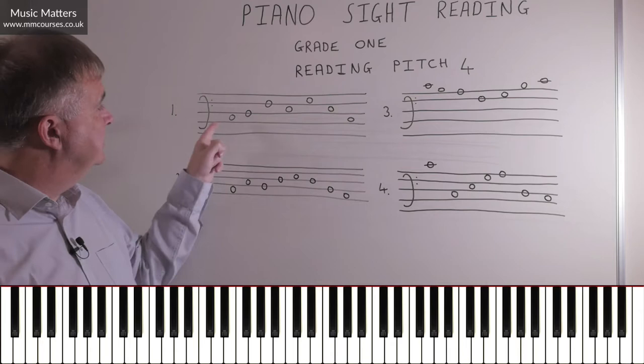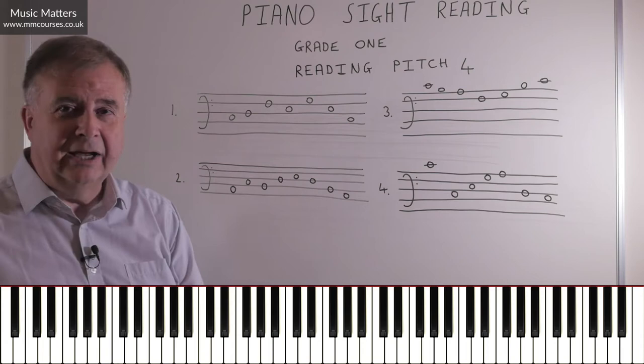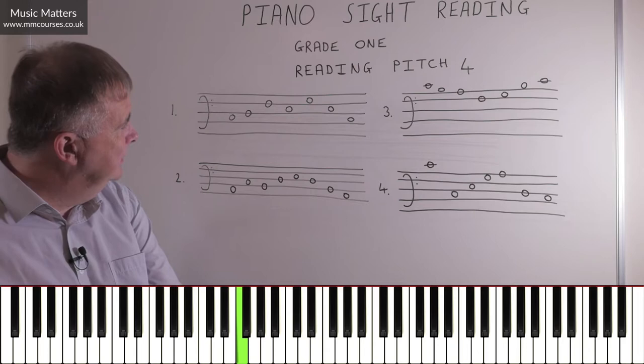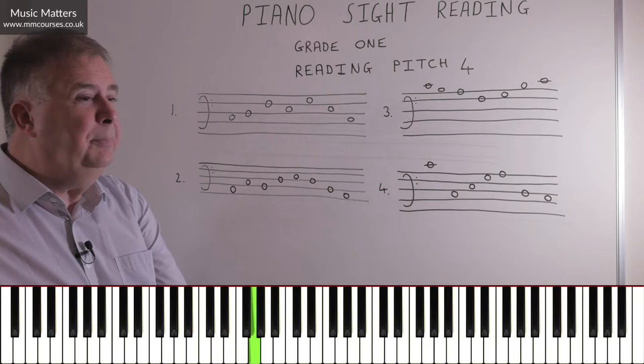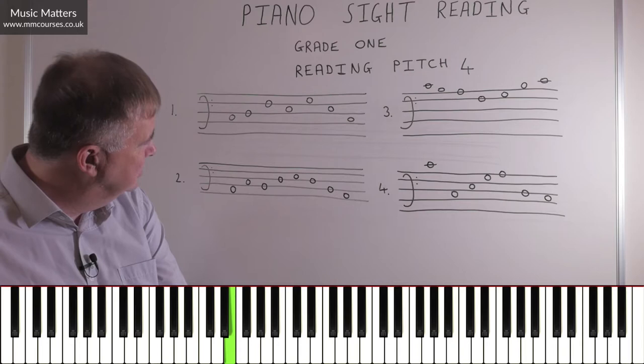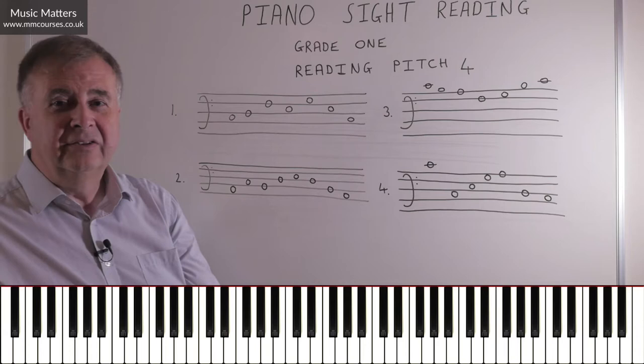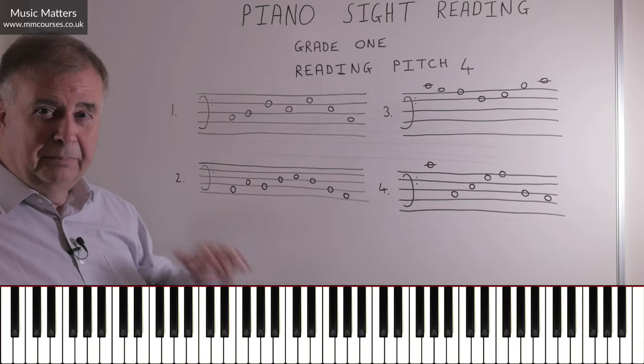Can we find those notes on the keyboard? The first note is C, an octave below middle C - the next C down. Then stepping up to D, skipping up to F, stepping down to E, skipping up to G, skipping back down to E, and skipping back down to C to finish. How much did you do by thinking letter names? How much by reading patterns, thinking skips and steps? Being able to do both is really handy.